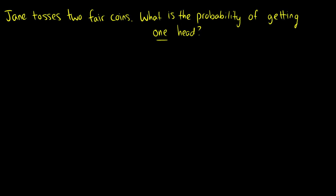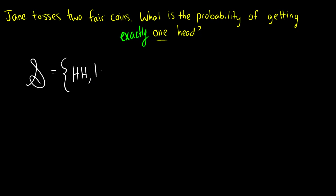Let's do a problem right away. Jane tosses two fair coins. What is the probability of getting exactly one head? Let's write out the sample space. The first coin could be heads and the second heads, the first heads and the second tails, the first tails and the second heads, or the first tails and the second tails. So there are four possible outcomes.